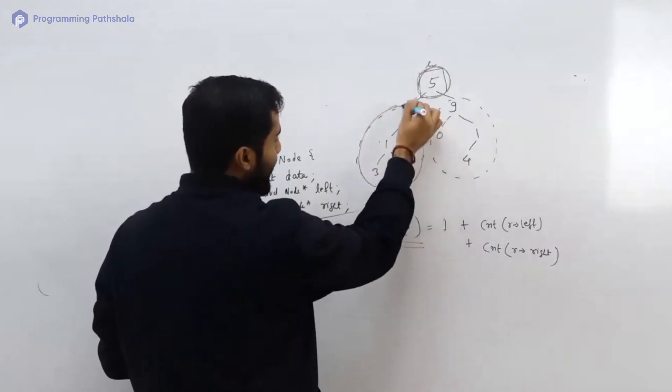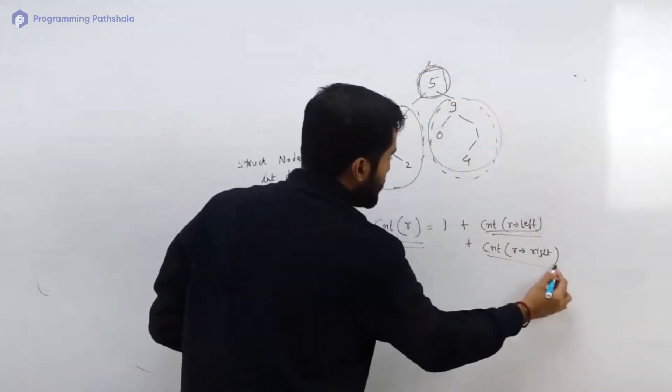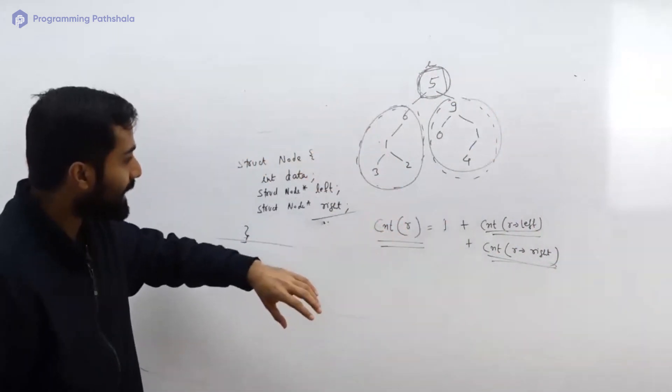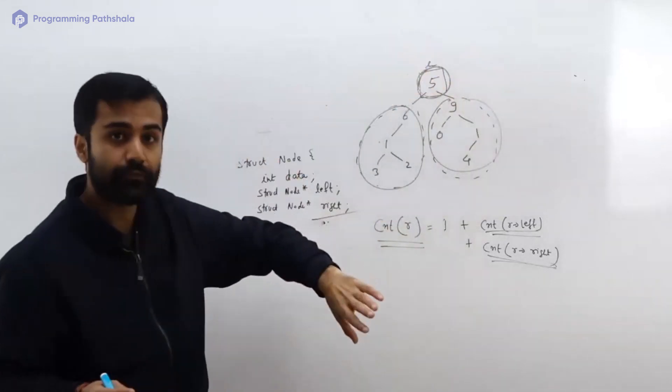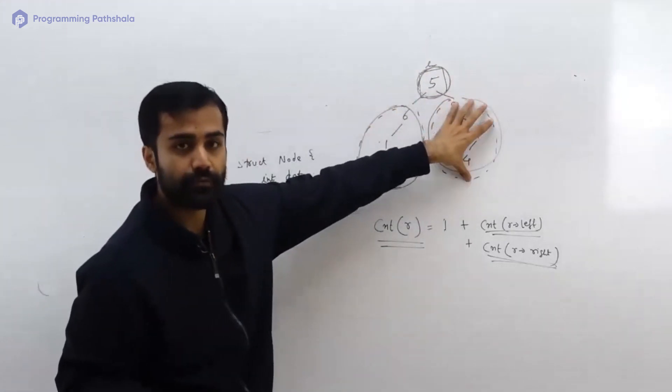When you look at this equation, this equation is saying that if you have to find the number of nodes in the big structure, then you first have to find the number of nodes in smaller, smaller structures. You find the number of nodes in this, find number of nodes in this, add one to it. That's how you get the number of nodes present in this.